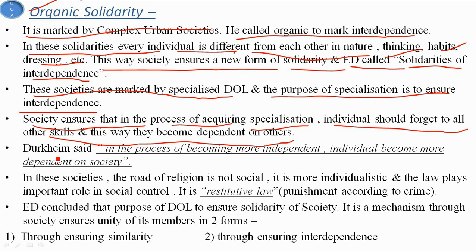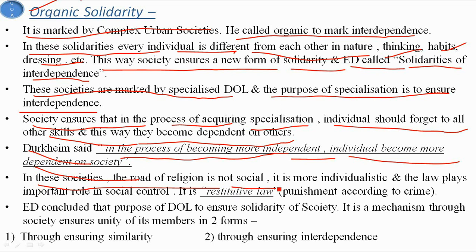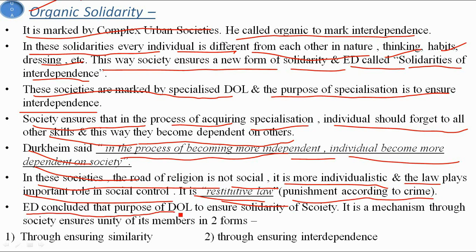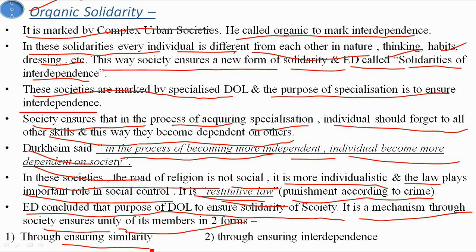Durkheim said that in the process of becoming more independent in one skill, individuals become more dependent on society overall. In these societies, the role of religion is more individualistic rather than social, and law plays an important role in social control. There is restitutive law, meaning punishment according to the crime. Durkheim concluded that the purpose of division of labor is to ensure solidarity — through similarity in mechanical societies and through interdependence in organic societies.